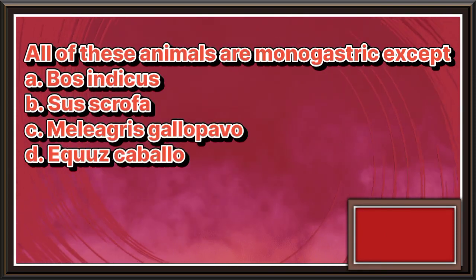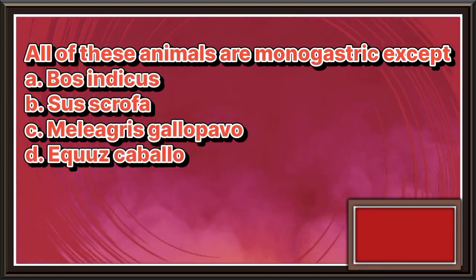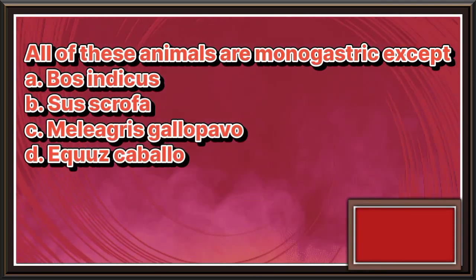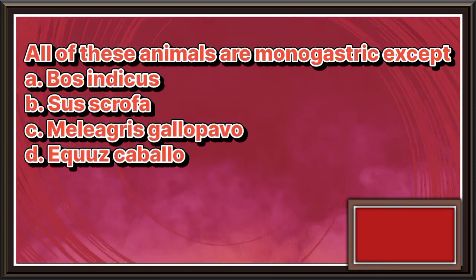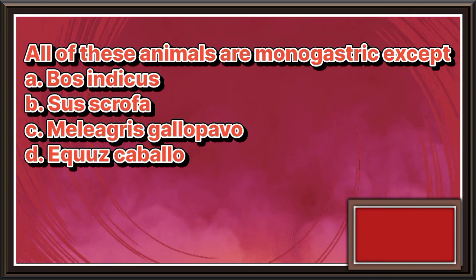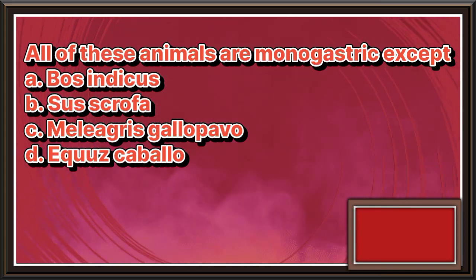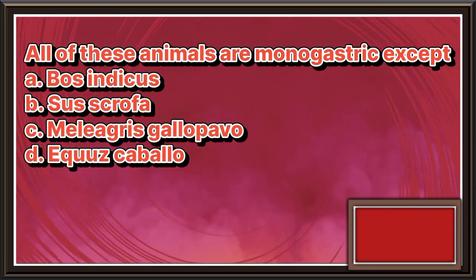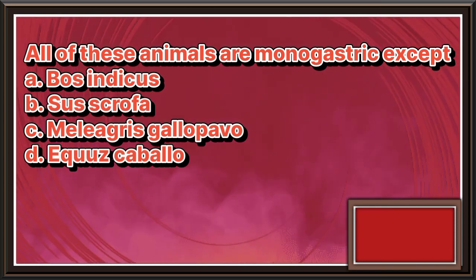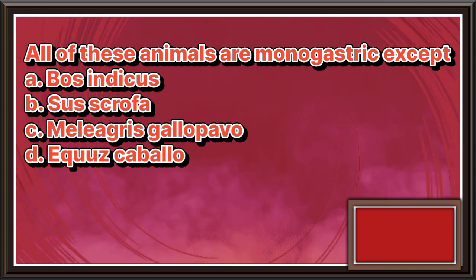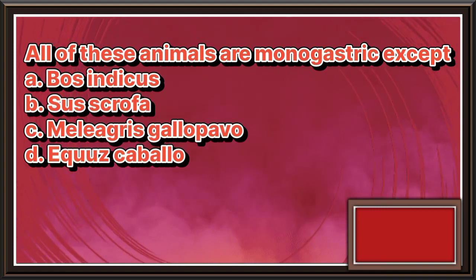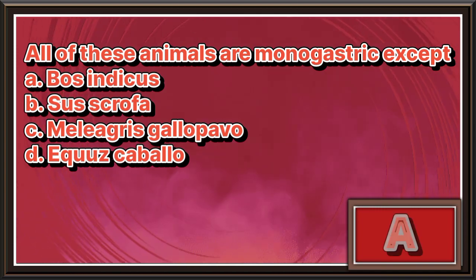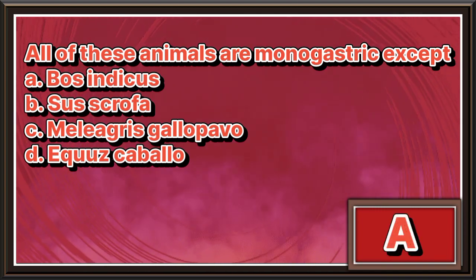All of these animals are monogastric, except. A. Bos indicus. B. Sus scrofa. C. Meleagris gallopavo. D. Equus caballus. The answer is letter A.